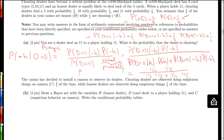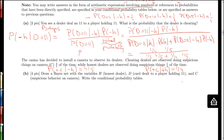Moving on to the next part of the question. The casino has decided to install a camera to observe its dealers. Cheating dealers are observed doing suspicious things on camera 4/5 of the time, while honest dealers are observed doing suspicious things 1/4 of the time. We're given that P(suspicious | cheating) = 4/5 and P(suspicious | honest) = 1/4. We're now asked to draw a Bayes net with variables H, D, and C, and write the conditional probability tables for it.